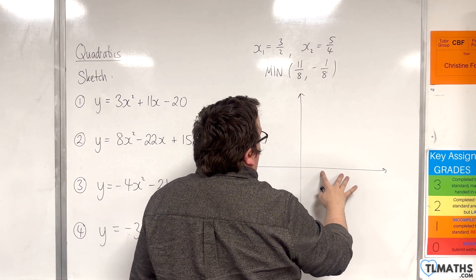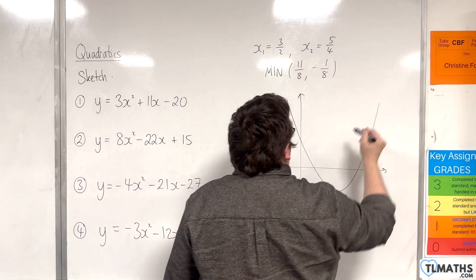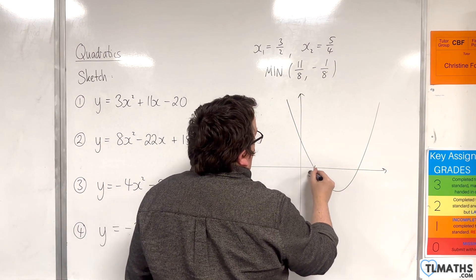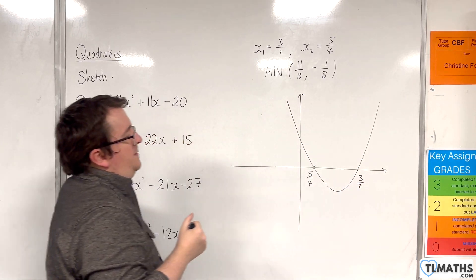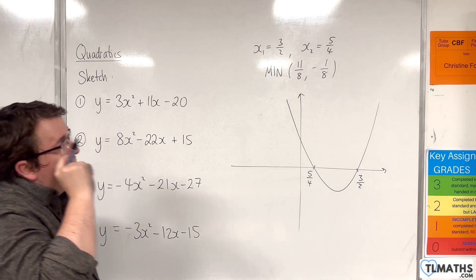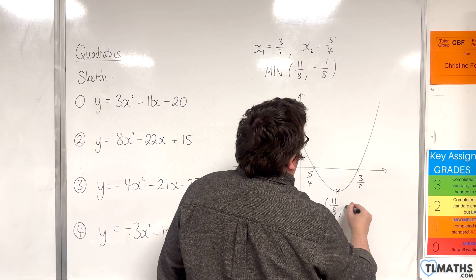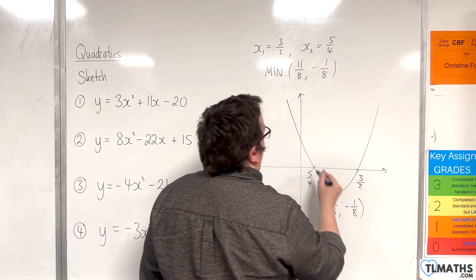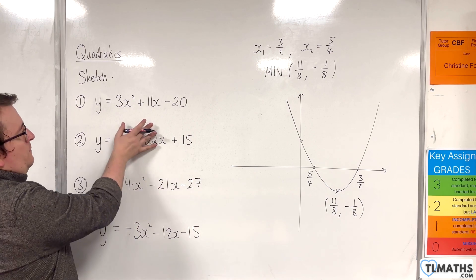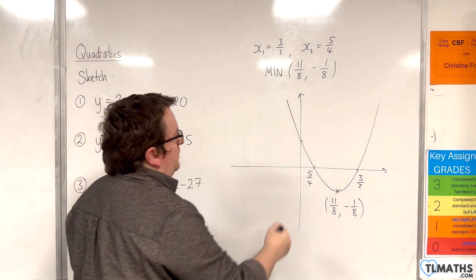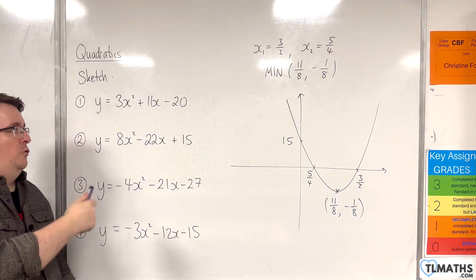These two points are on the right-hand side here, so our parabola needs to do something like that. This will be the 5/4, this will be the 3/2. It's not to scale, doesn't need to be. This is our minimum point, 11/8, -1/8. And this is where it crosses the y-axis, which is when x is 0, which is going to be 15. That is the sketch for number 2.